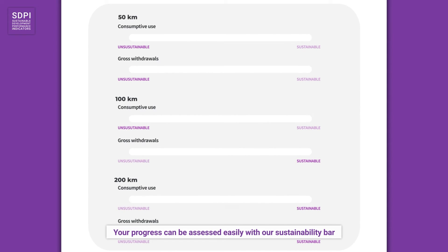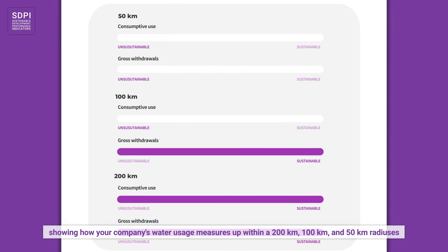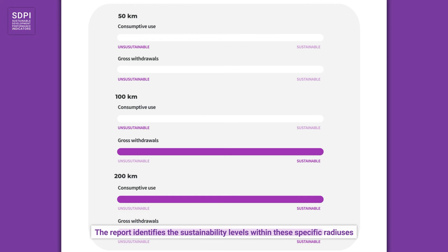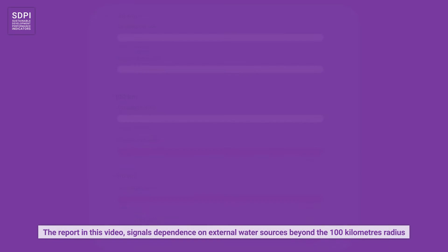Your progress can be assessed easily with our sustainability bar, showing how your company's water usage measures up within 200km, 100km, and 50km radiuses. The report identifies the sustainability levels within these specific radiuses, ultimately providing you with insights about your water sourcing. The report in this video signals dependence on external water sources beyond the 100km radius.